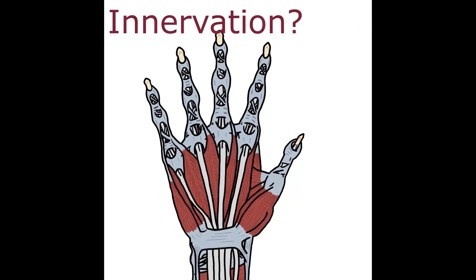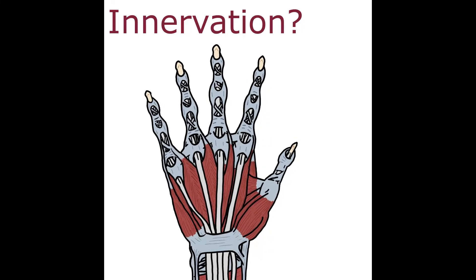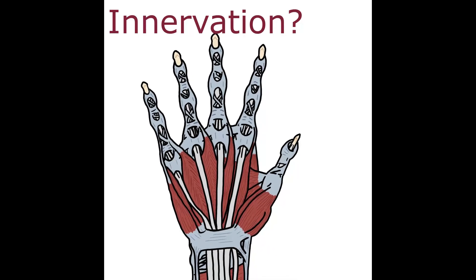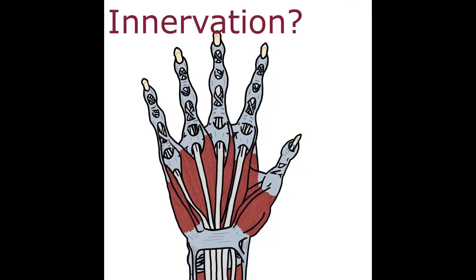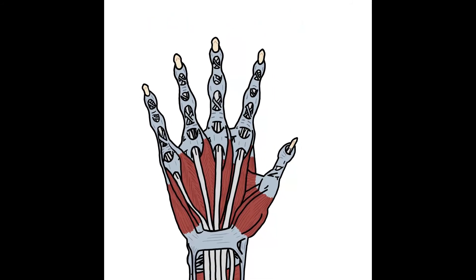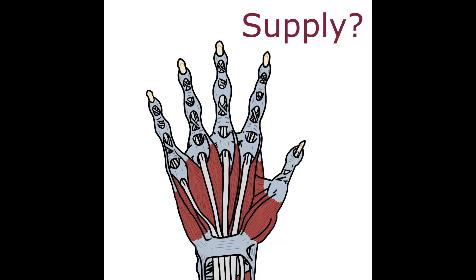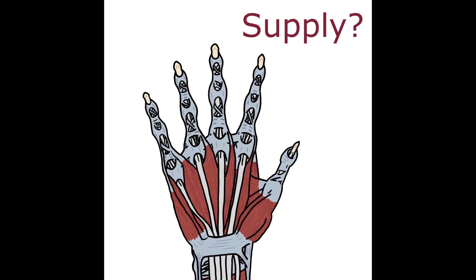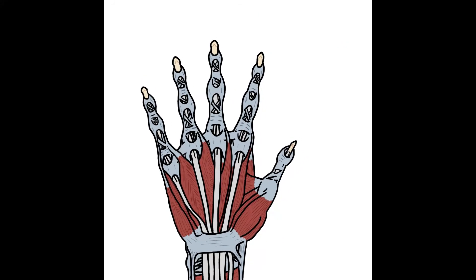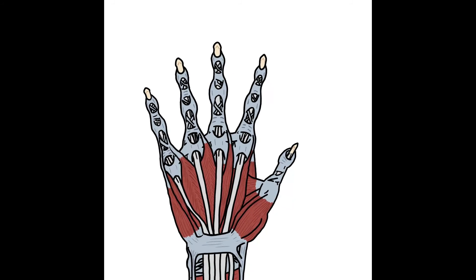For innervation: the first three and a half fingers is median, including the thumb. The last one and a half is ulnar. The posterior is radial. For blood supply: ulnar and radial arteries from the brachial artery, and the veins drain into the cephalic vein.